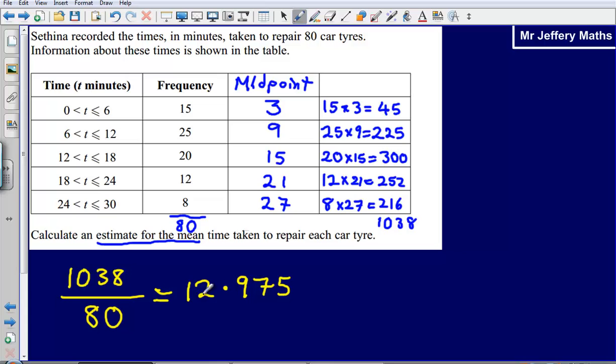So instead of rounding it up to 13, or calling it 12.98 or something like that, just write everything down that's in your calculator. That way you can't get penalized for incorrectly rounding. If you're not asked to round, you don't need to. So it's silly to lose accuracy marks for incorrect rounding when you haven't been asked to round.